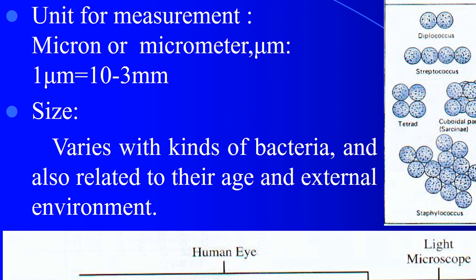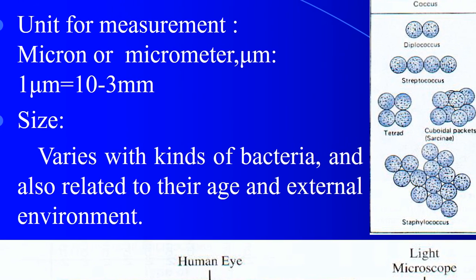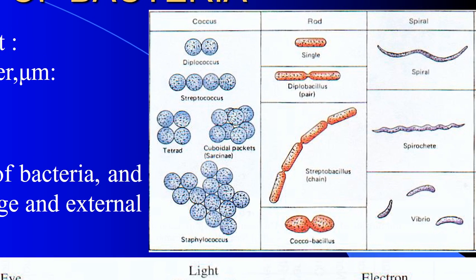Size varies among different kinds of bacteria, also related to their age. Bacteria are found in many shapes. They are divided into different shapes such as coccus, rod, and spirilla — these are the 3 types of bacteria.